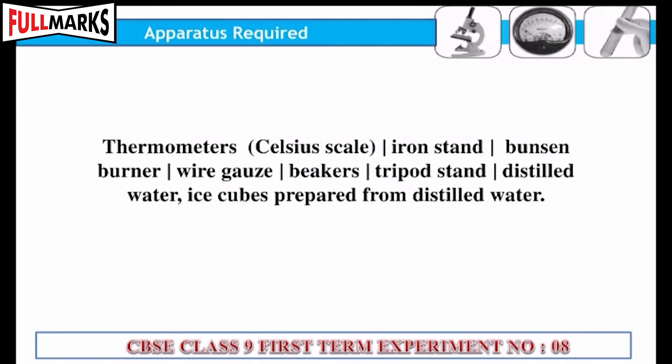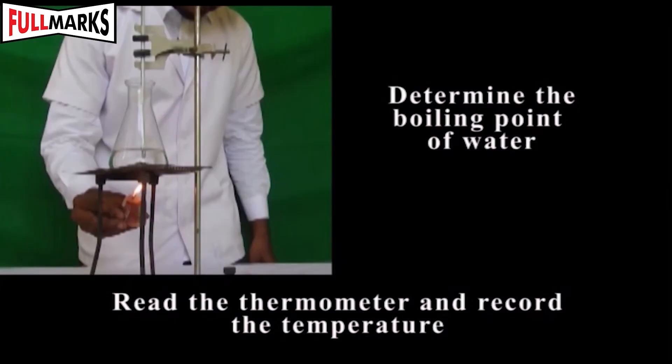Procedure to determine the boiling point of water: Take 25 to 30 ml of water in a round bottom flask. Place the flask on a tripod stand and fix a thermometer in it.